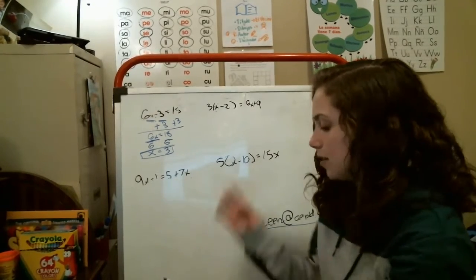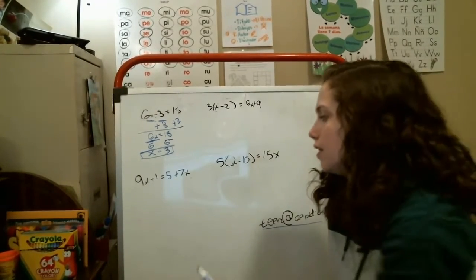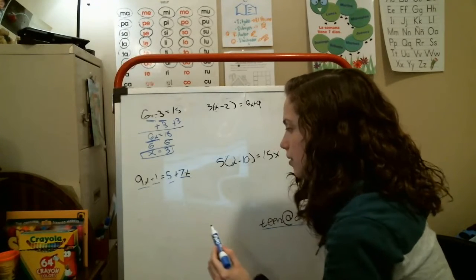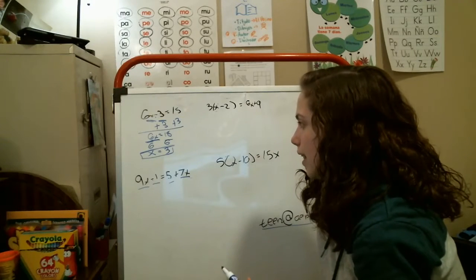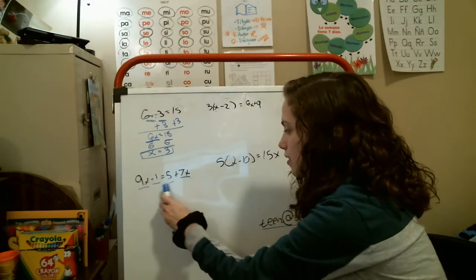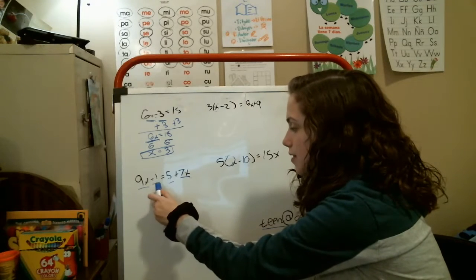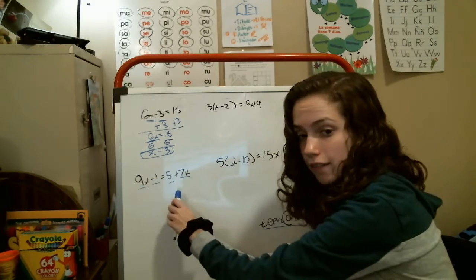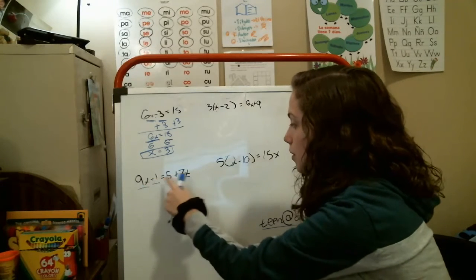We're going to move down here. Now we have two x values here and two non-x values. We're going to start off with these non-x values. These are like terms because they both don't have the x, and these are like terms because they do have the x, which means they can only work with each other.